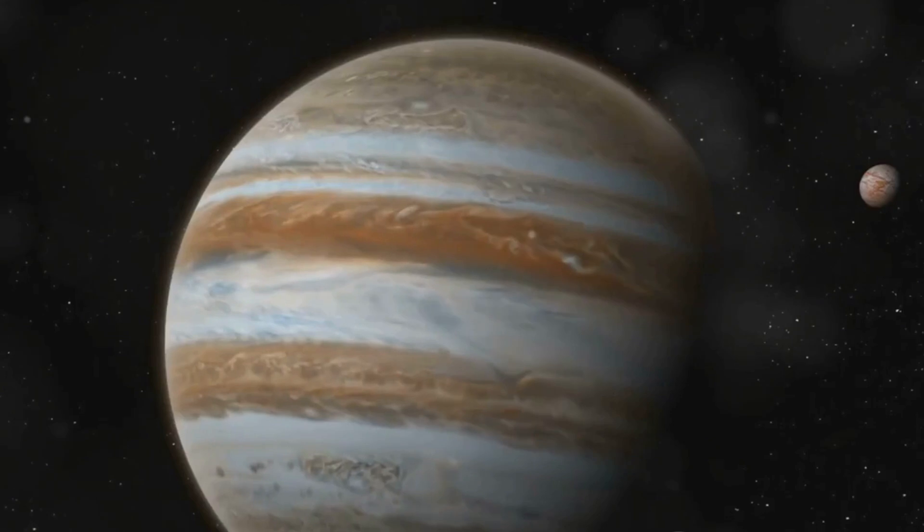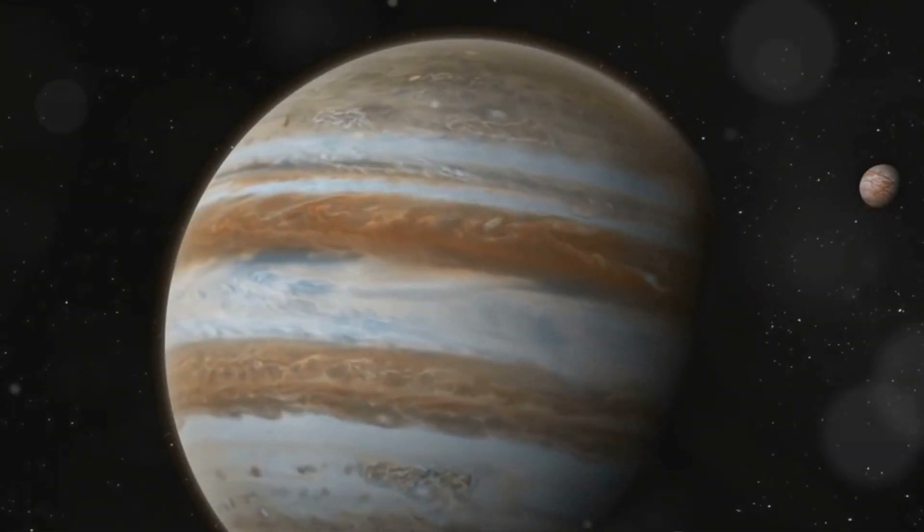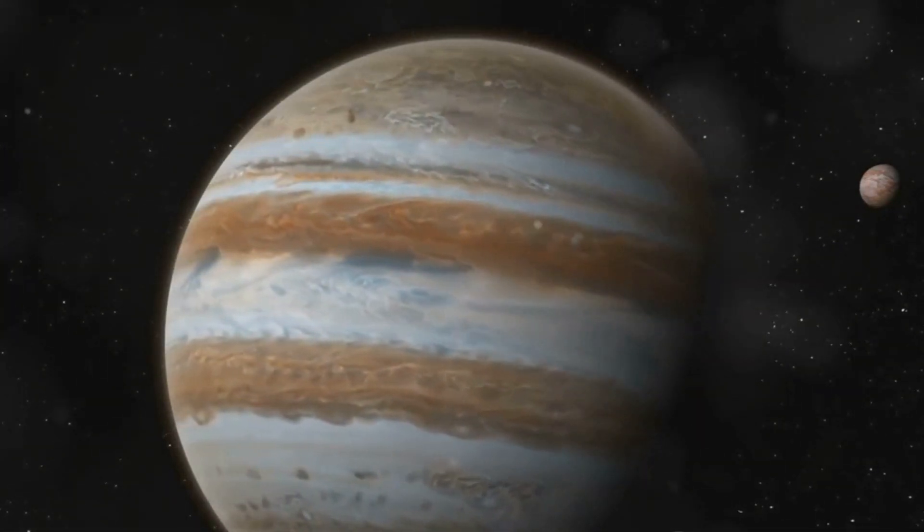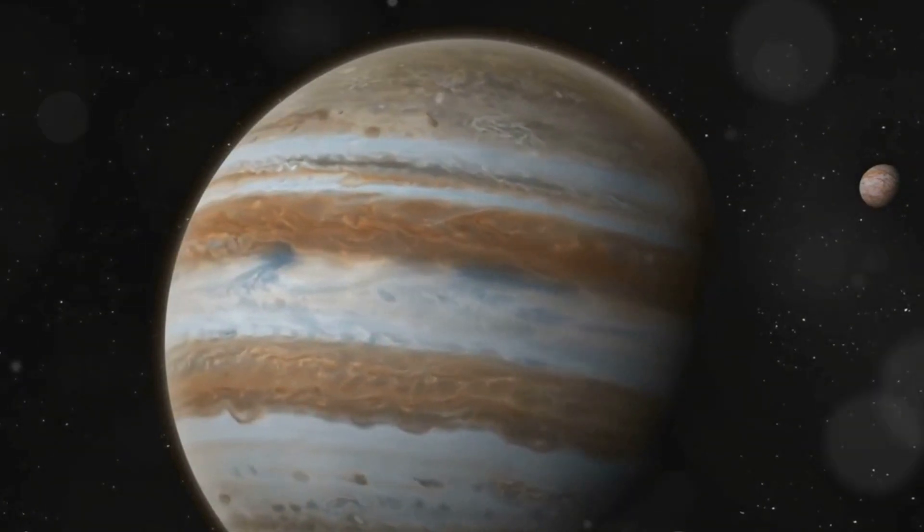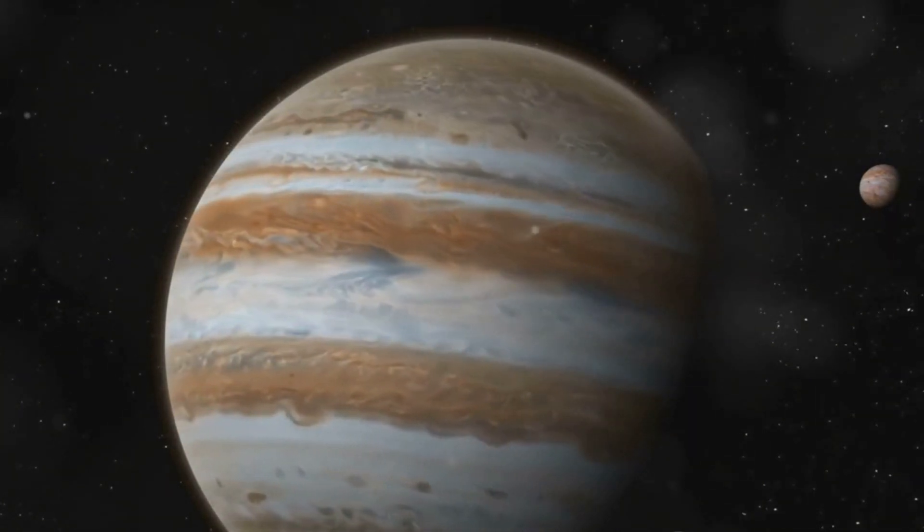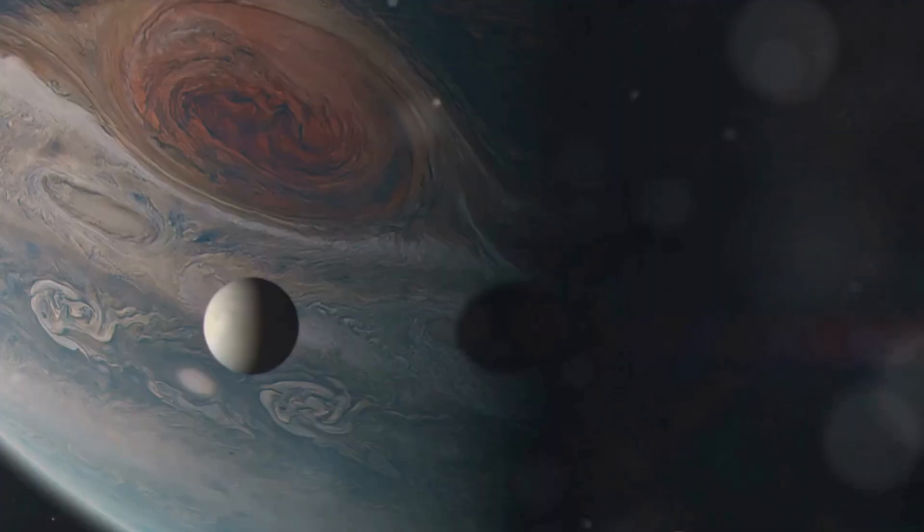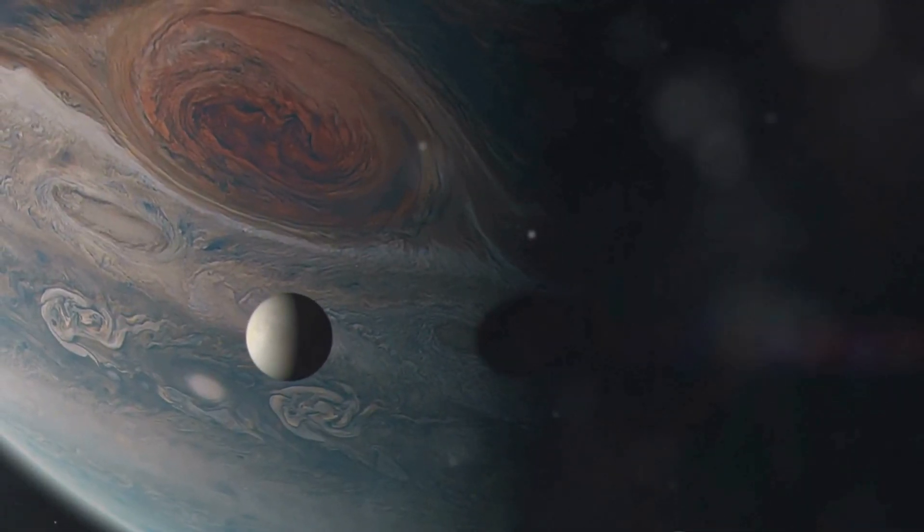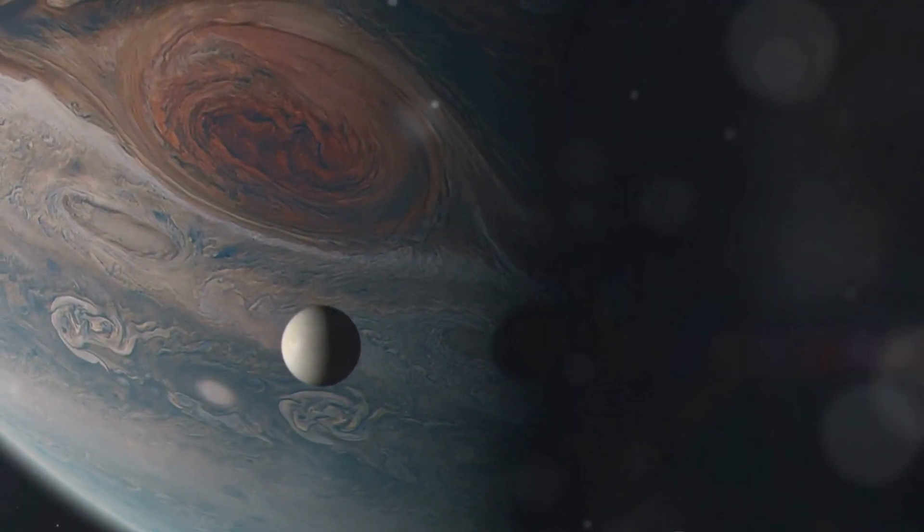If you could stand on Jupiter during this event, which, let's be clear, you can't due to its lack of a solid surface, you would see three distinct round shadows slowly traversing the planet's cloud tops. These shadows are not static, they dance and shift as the moons orbit Jupiter.